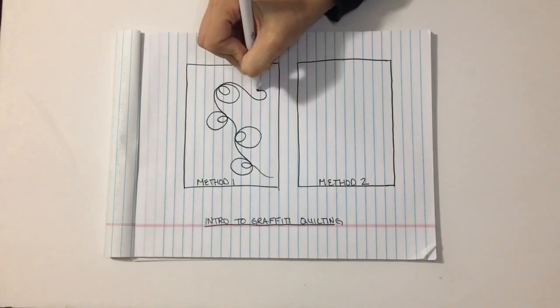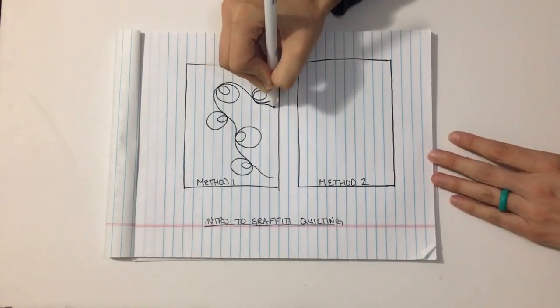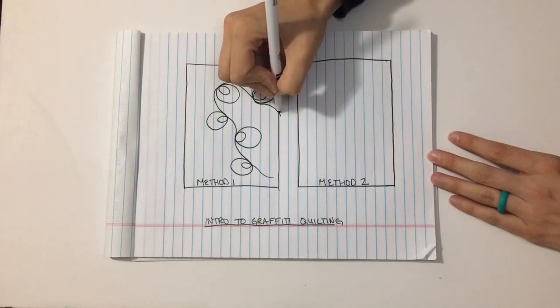You just kind of loop it back on yourself like I'm doing here. And once you reach the end of that loopy design, then you're going to begin adding other shapes.